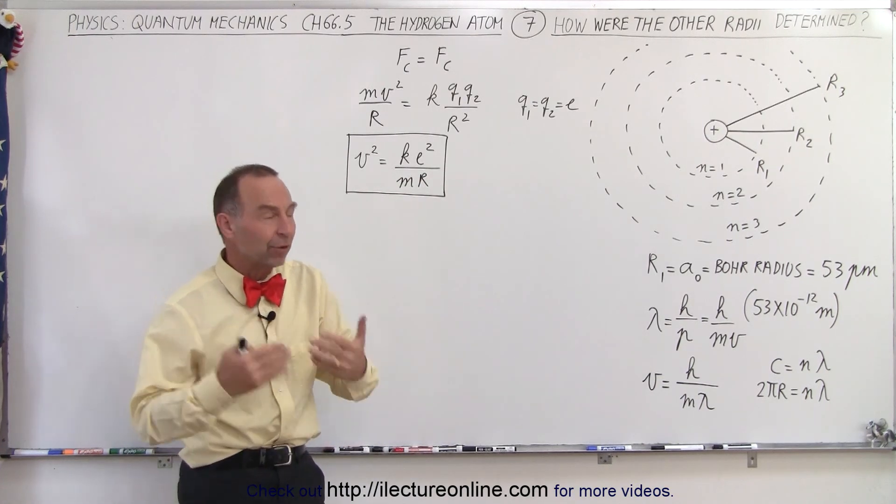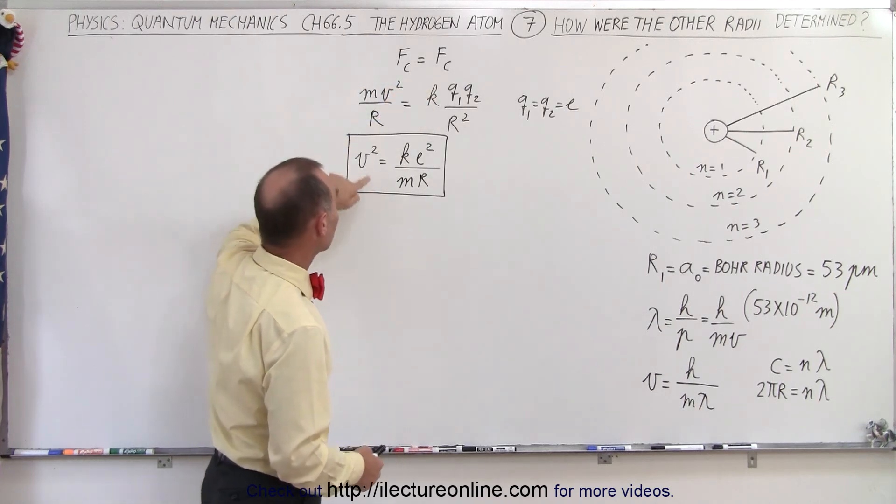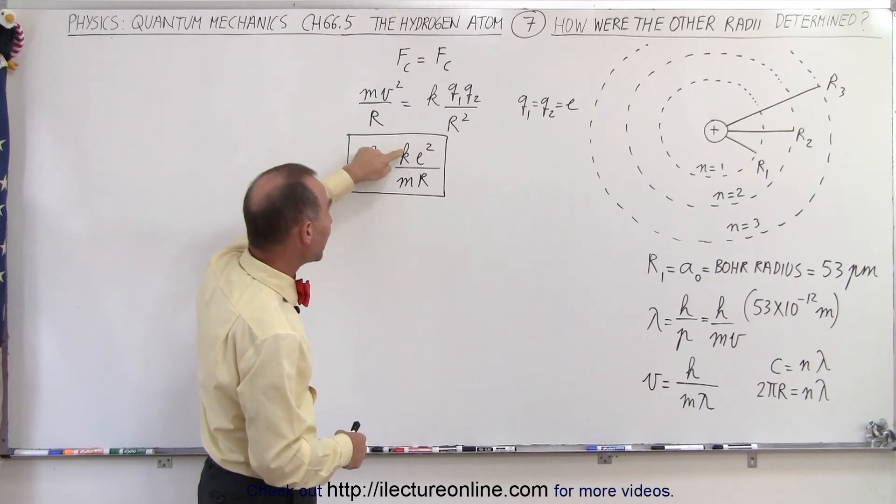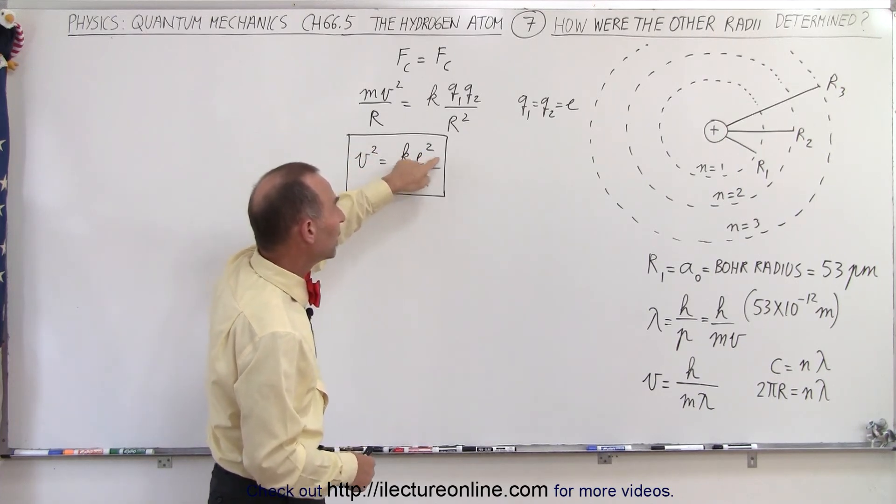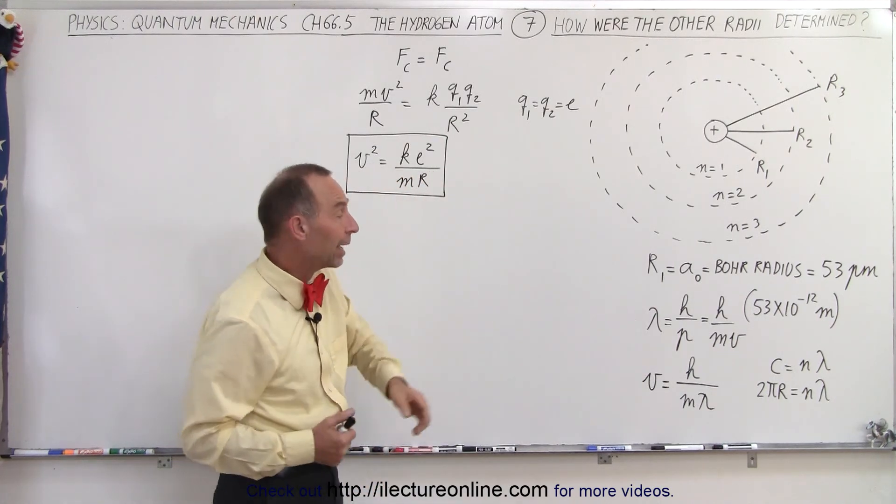Now, starting with the same principles, that the centripetal force equals the Coulomb force, which meant that V squared around the orbit of the nucleus has to equal K E squared divided by mR, E of course being the charge on the electron or the proton.